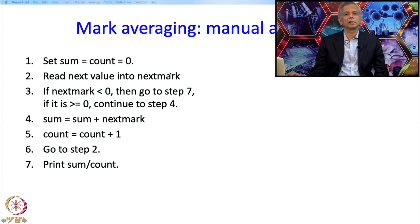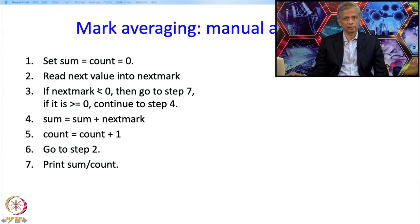In a manual algorithm we will not really have variables of course, but since you now know variables we might as well bring them in to make our discussion clearer. We are going to start by making these variables 0, then read the next value into next_mark. If the mark value is less than 0, we know we need to terminate — at that point we print the average and stop.